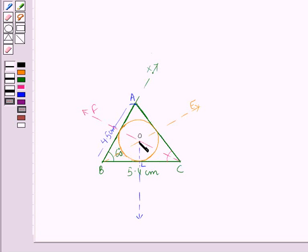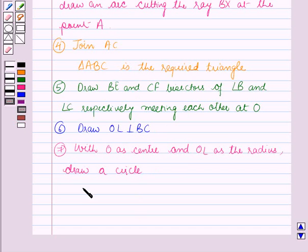Now, you can see here, with O as center and OL as radius, we have drawn a circle which is touching all three sides of the triangle. This circle is called the incircle of the triangle ABC. Therefore, this is the incircle of the triangle ABC.